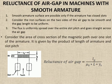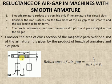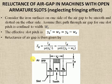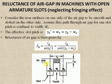First, we are going to consider the armature surface as a smooth one. A smooth armature surface is possible only if the slots are closed ones. This figure indicates the closed slots. The next figure represents the open slots, which you are quite familiar with from your previous machines classes.